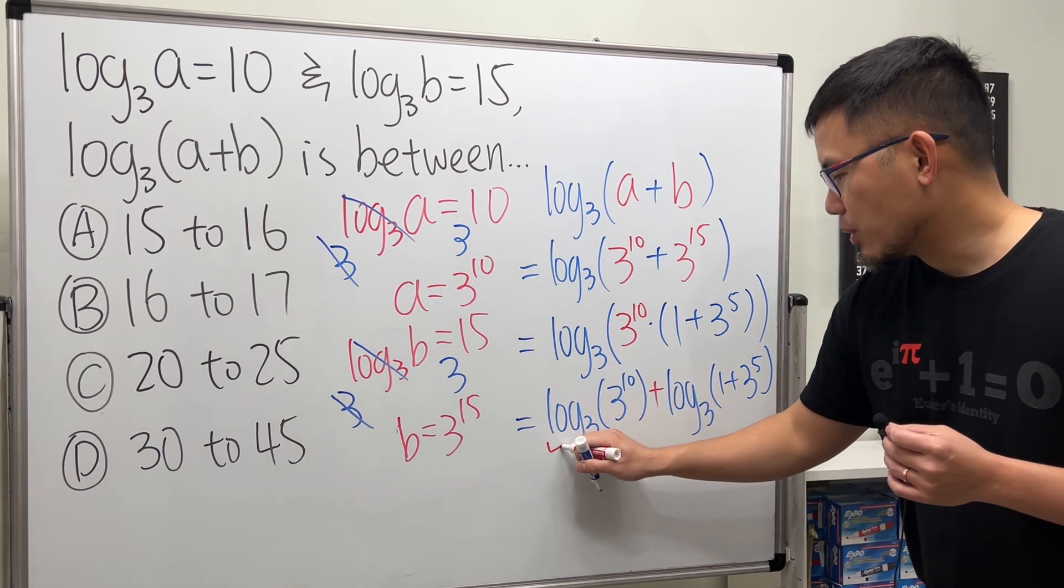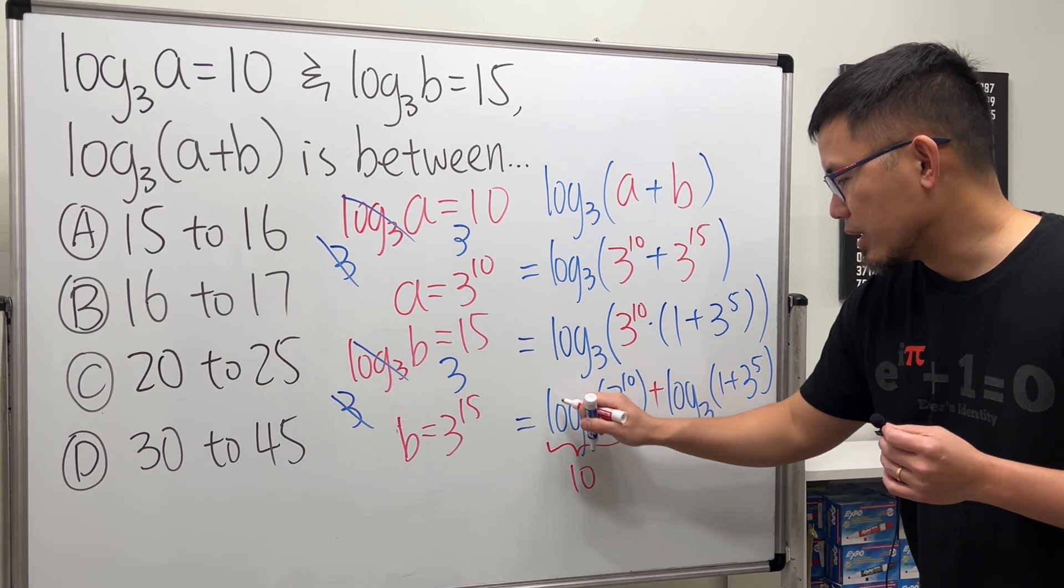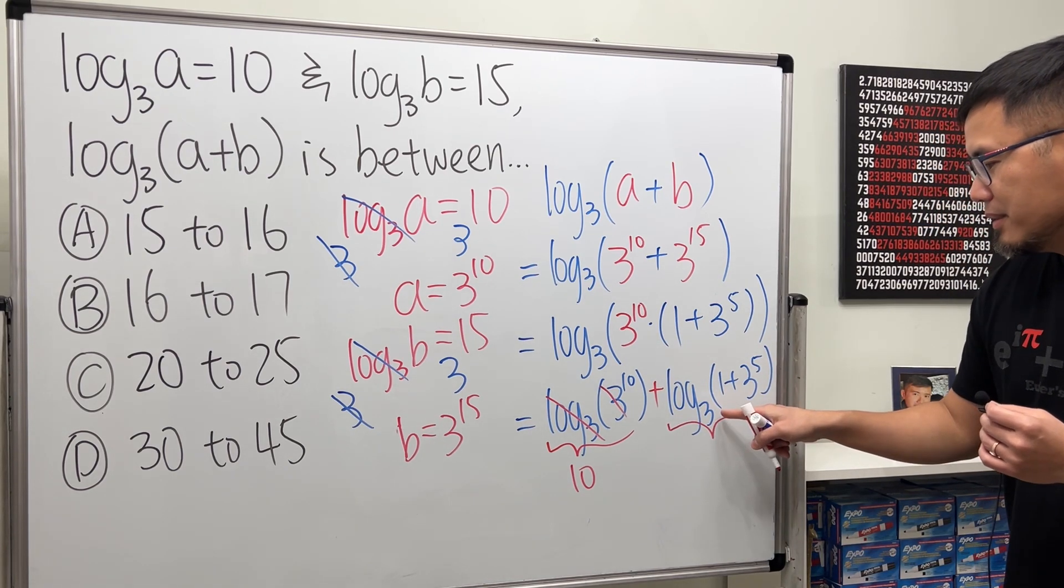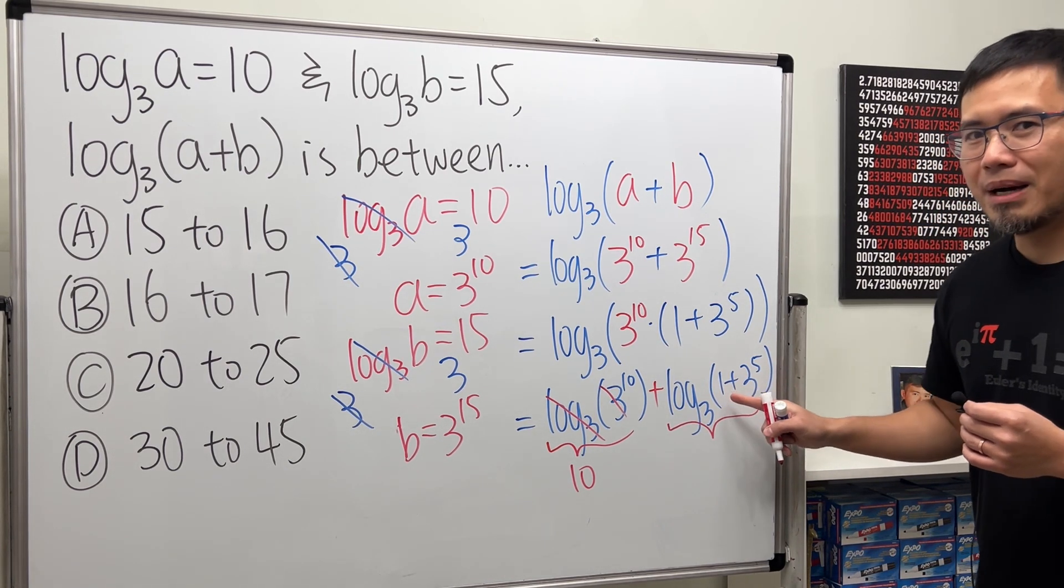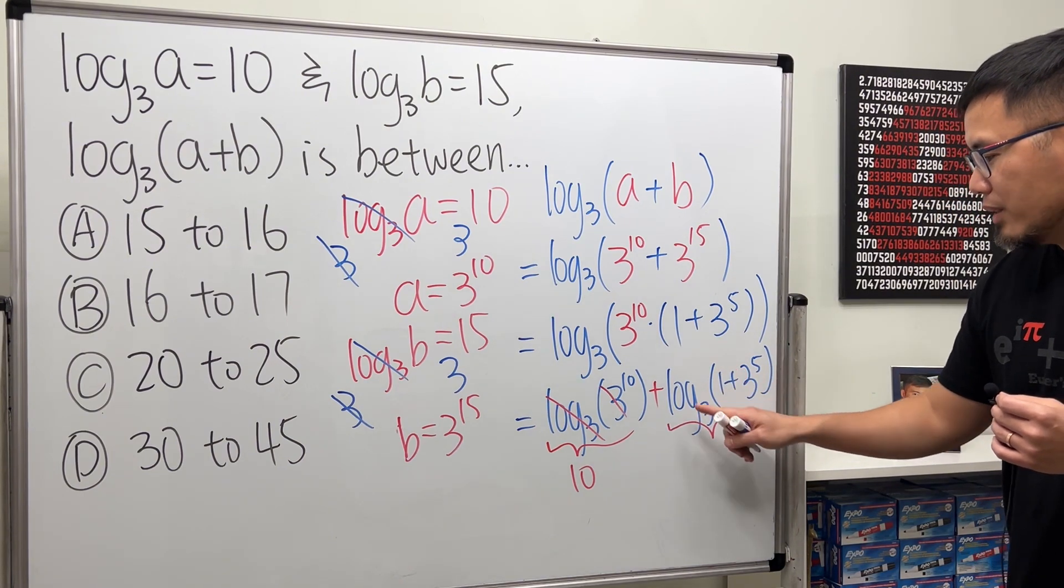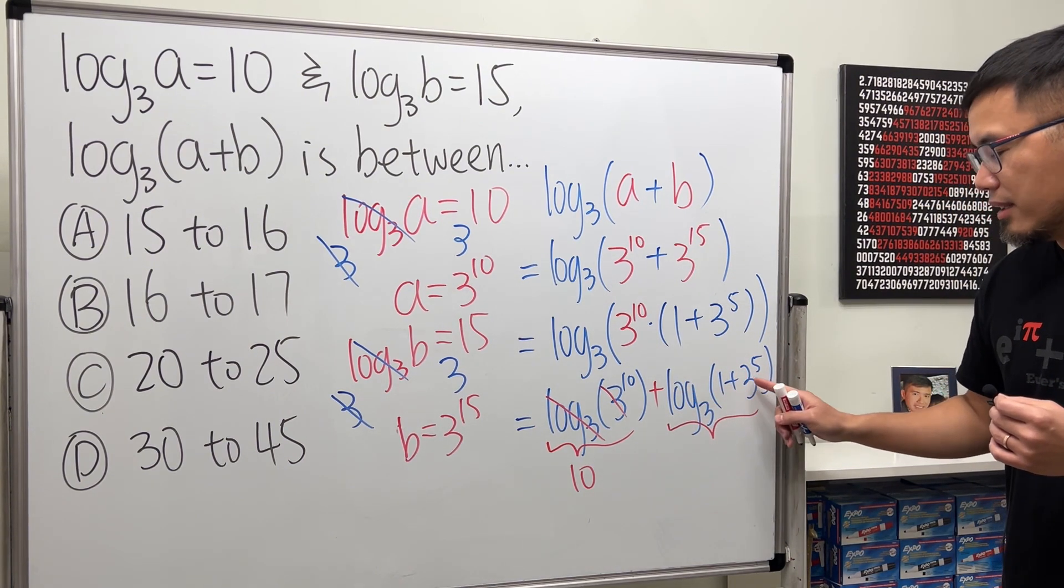Now for the first one, this right here is exactly equal to 10, because they cancel. And for the second one, right here, you can see, the 1 is kind of bothering us, right? 1 plus 3 to the 5th. If we don't have the 1, we can just cancel the log base 3 and then the 3. Good.